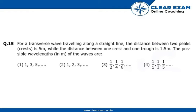Hello everyone, welcome back. Let's see our next question. The question reads: For a transverse wave traveling along a straight line, the distance between two peaks, that is crests, is 5 meters, while the distance between one crest and one trough is 1.5 meters.